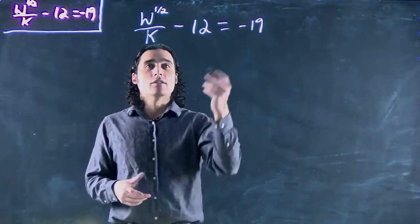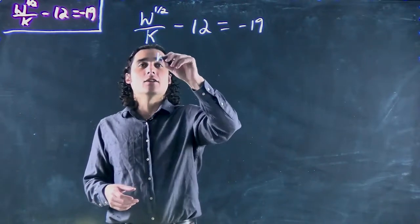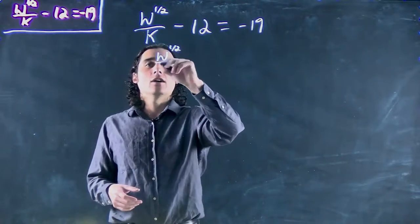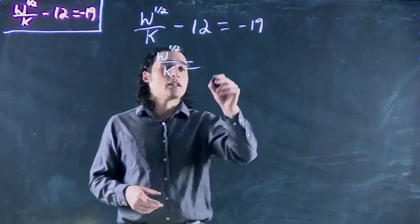First things first, we want to get rid of the 12, add 12 to both sides. So w to the one-half all over k is gonna equal negative 7.